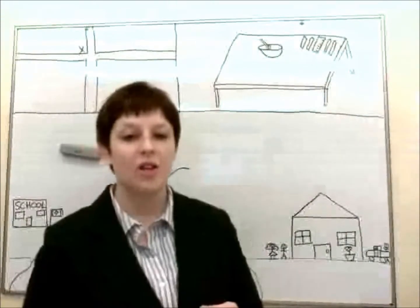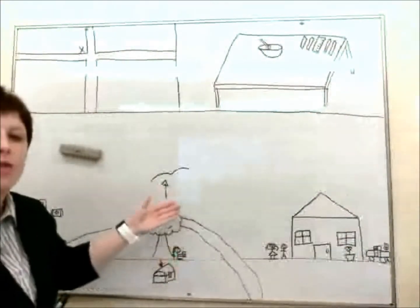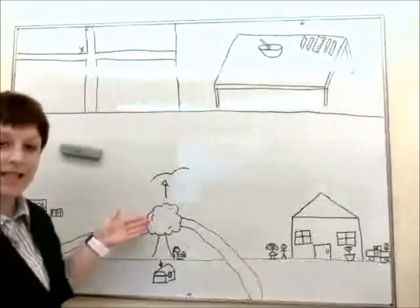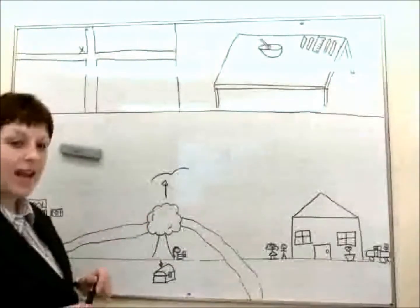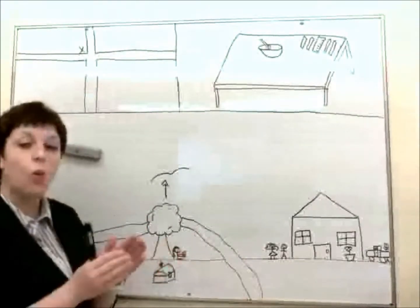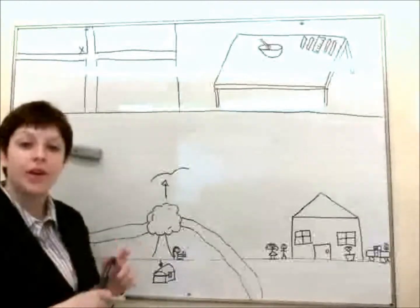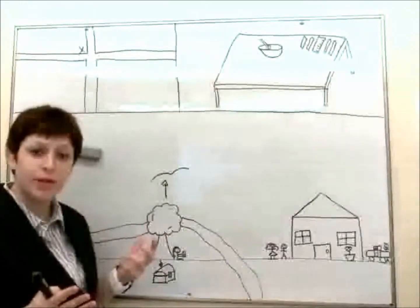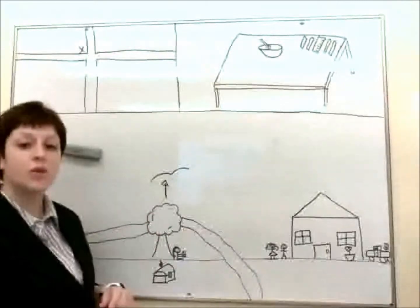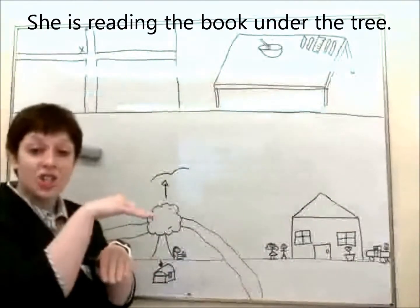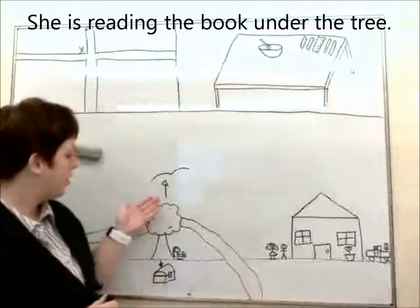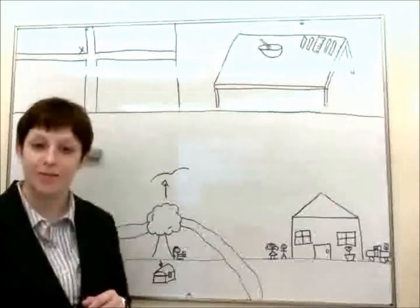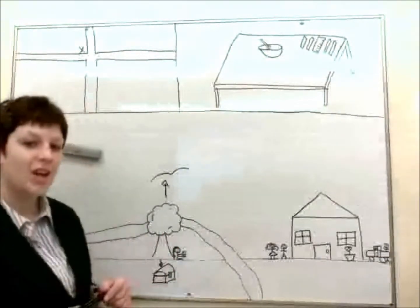So why don't we move on in our journey? Here we can see a tree. There is a woman reading a book. But where is she reading this book? She is reading the book under the tree. So she is under the tree reading a book.